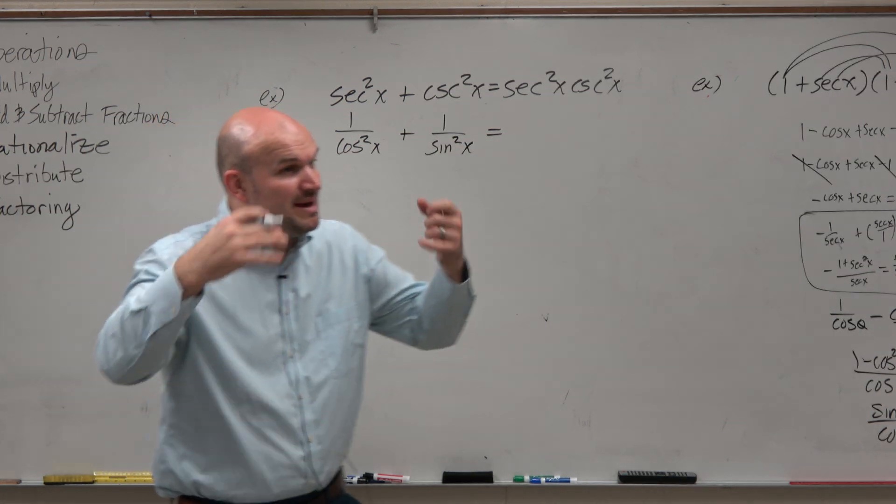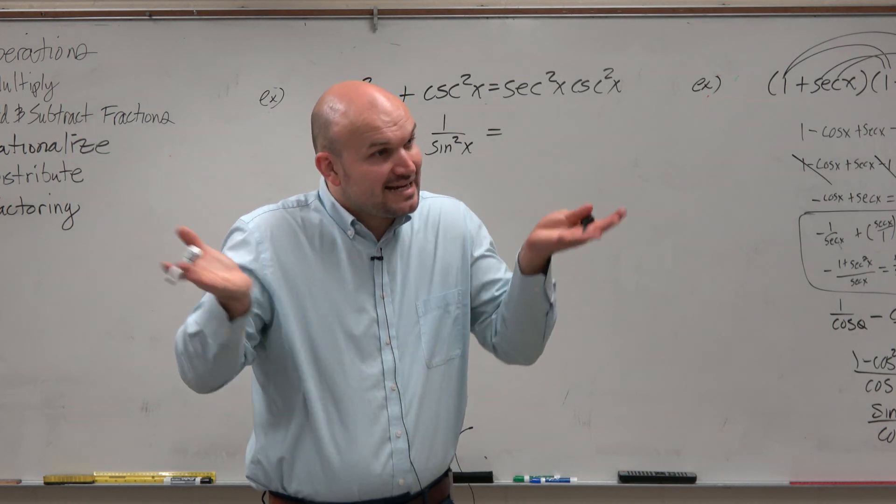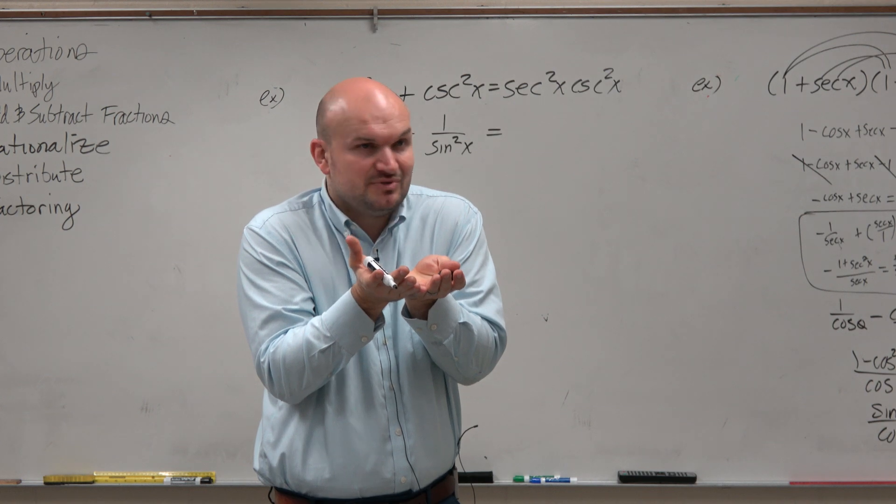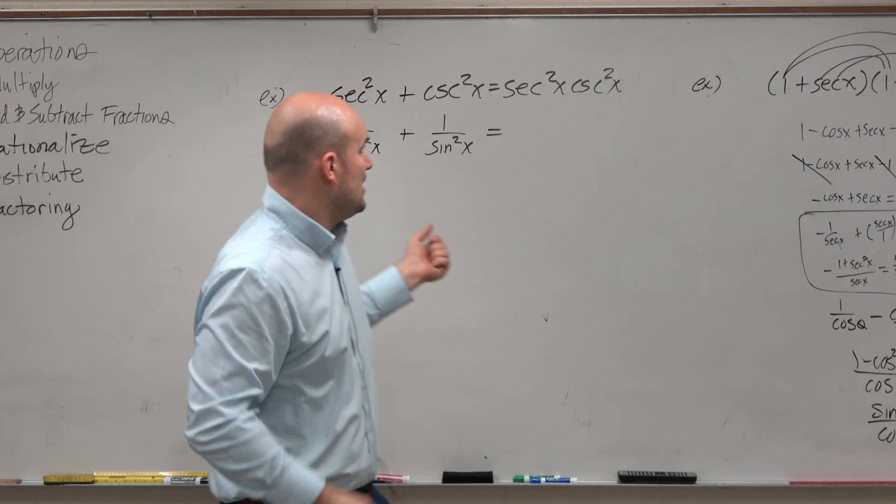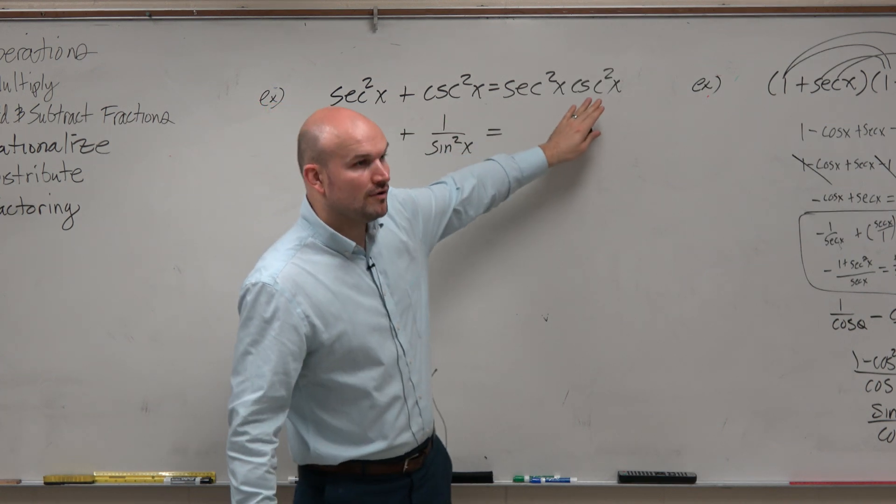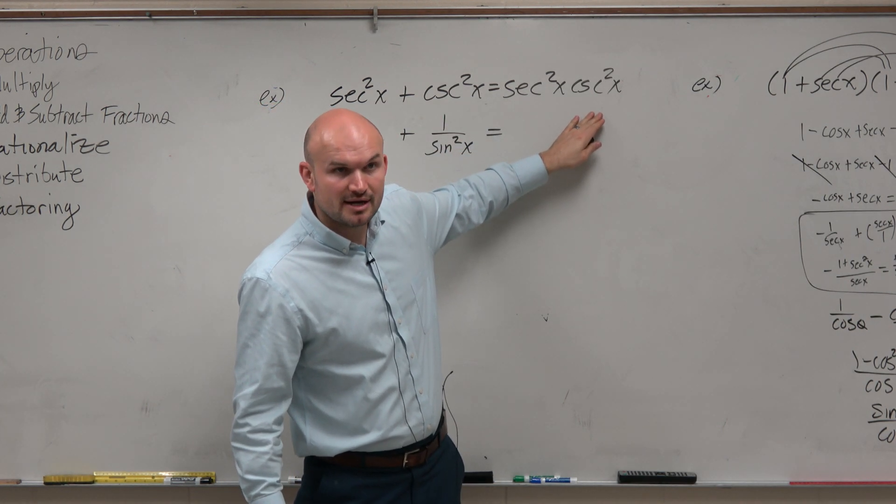Actually, having them as fractions actually helps me, because now I can combine them to get, and all I've got to do is combine them just by attaining a common denominator. Because if I can combine them, I'm going to get rid of the addition side. So therefore, hopefully I can make it look like the right side.